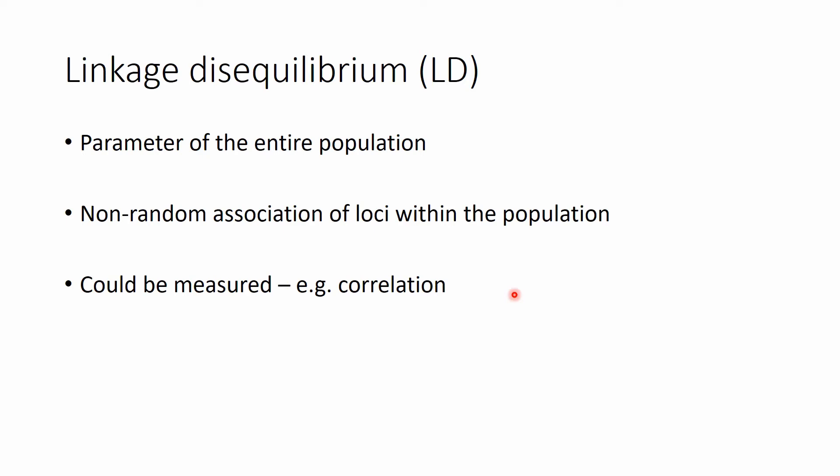In other words, LD tells us something about the strength of information — if we see an allele at a certain locus, what it can tell us about the occurrence of another allele at another locus. There are various methods to measure LD, which we will discuss in the next video.